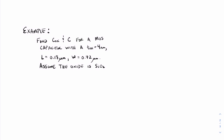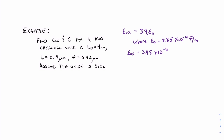The first step is to solve for the oxide permittivity. Because it's silicon dioxide, we can look up that the relative permittivity is 3.9, and we must multiply that by the permittivity of free space, epsilon naught, which is 8.85 times 10 to the minus 12 farads per meter. When we make this multiplication, we find that epsilon ox equals 3.45 times 10 to the minus 11 farads per meter.